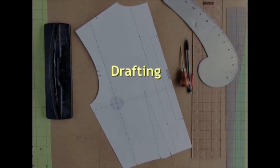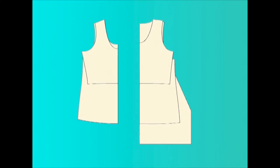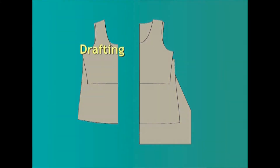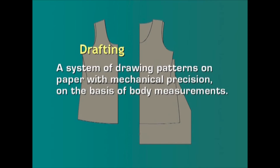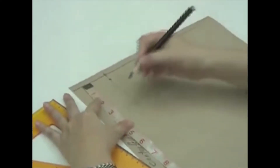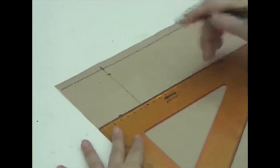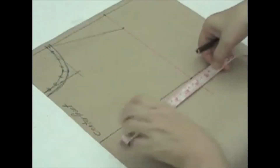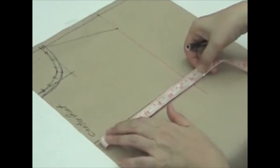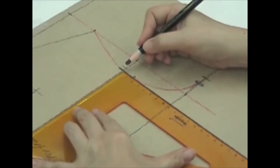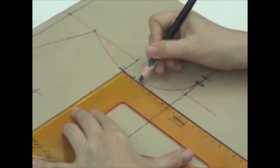Coming to the first procedure, that is drafting. It is a two-dimensional basic method of preparing a paper pattern. Drafting may be defined as a system of drawing patterns on paper with mechanical precision on the basis of body measurements. The pattern is prepared on brown paper using personal measurements of the wearer. The garment prepared by this method fits exactly to the satisfaction of the wearer. It is economical to draft one's own patterns, and changes in style can be made by adopting the basic pattern.